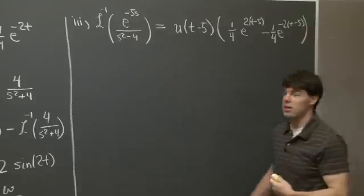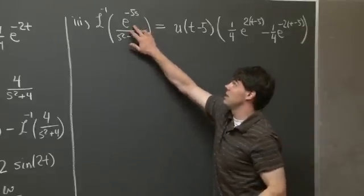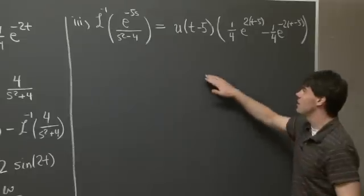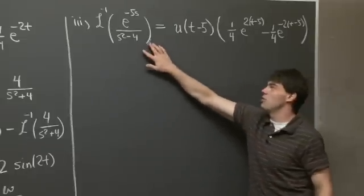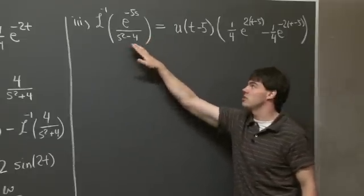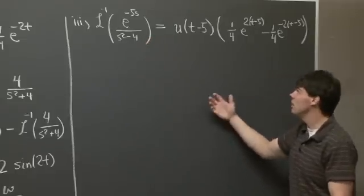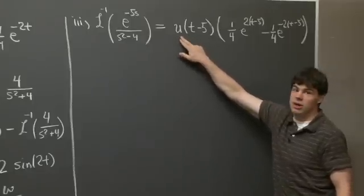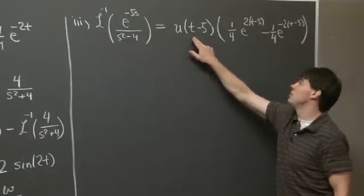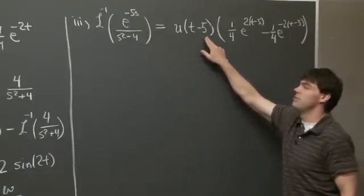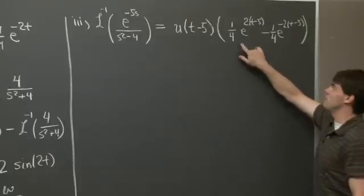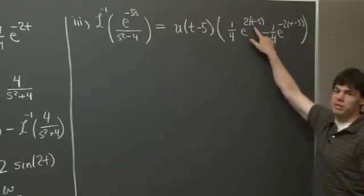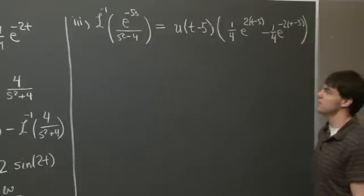Just to reiterate: when we have an exponential e to the minus 5s and we already know the inverse Laplace transform of everything else, we multiply by the step function u(t minus 5) using the same shift, and wherever we see t in the inverse Laplace transform, we replace it with t minus 5.